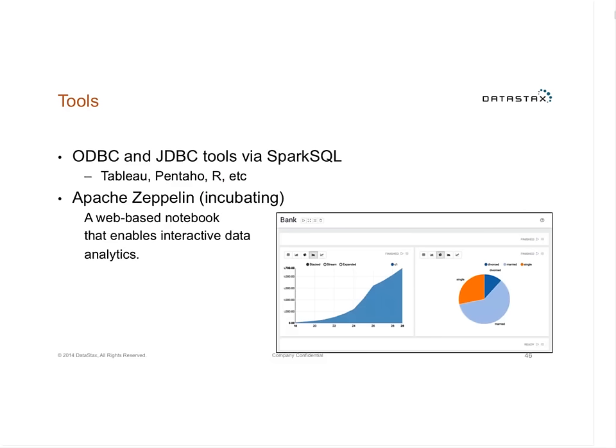Because we're integrating with Spark, we can tap into the entire Spark ecosystem of tools. Through ODBC and JDBC — since Spark SQL has that interface — we can connect to tools like Tableau and Pentaho. There's also Spark R, and R ODBC and R JDBC for extracting data. And there are notebook-style tools like Apache Zeppelin, an incubating Apache project, that we can also tap into. The Spark ecosystem enables a number of tools in addition to what's already in the Cassandra ecosystem.